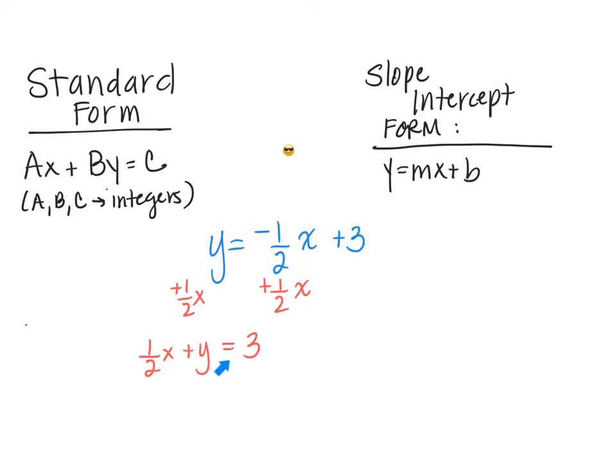We are so close to getting it to look like standard form. The difference is that A, B, and C are integers, which means no fractions. Can't have fractions in standard form. Integers are not fractions.